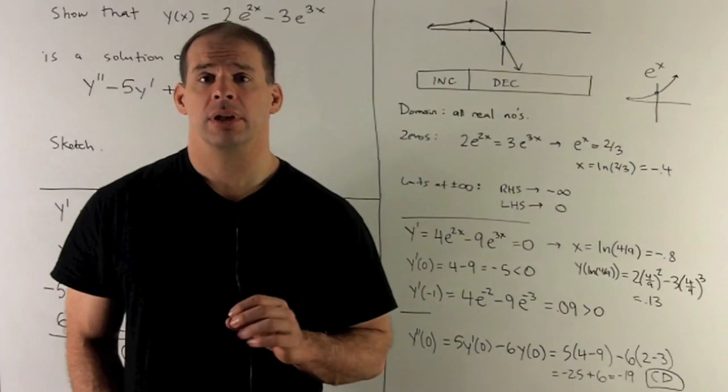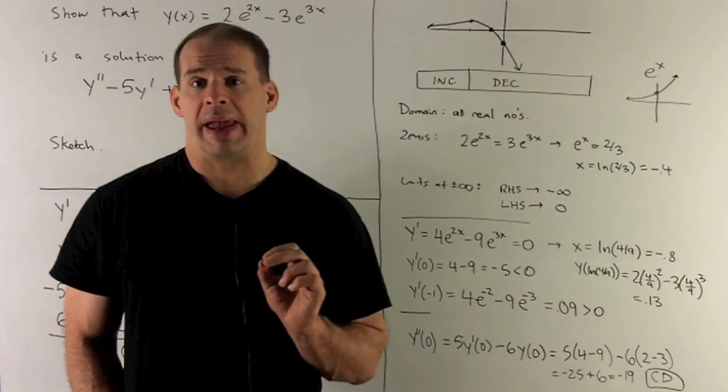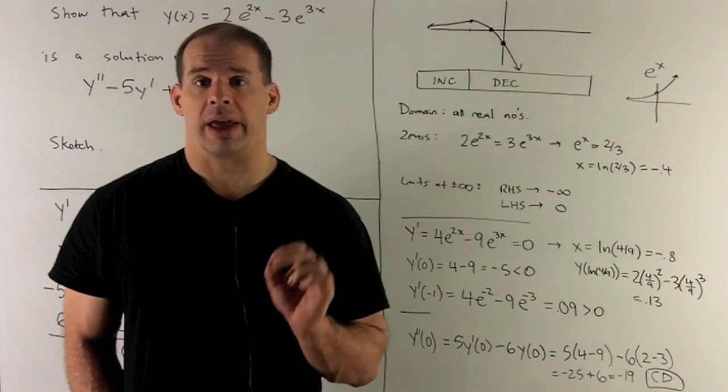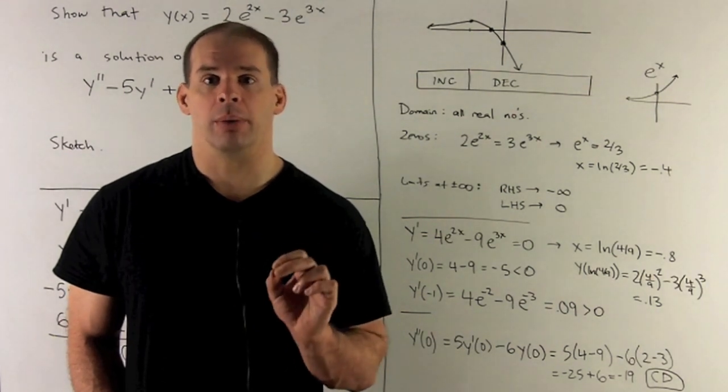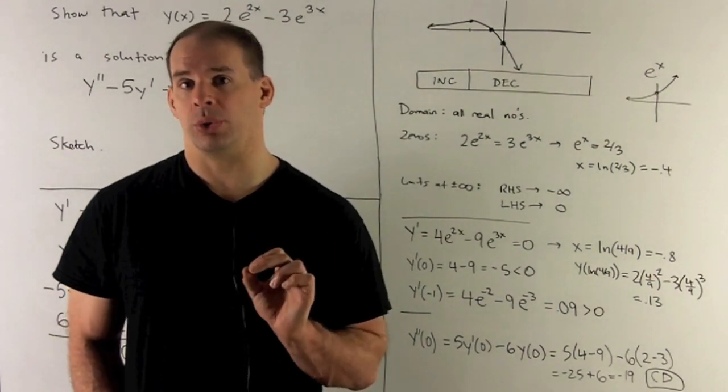Now, let's sketch the graph. So first note, domain is going to be all real numbers. The exponential function will take any number you put into it, so there are going to be no points that are excluded here.